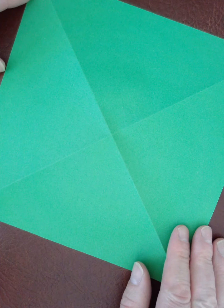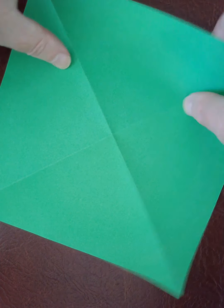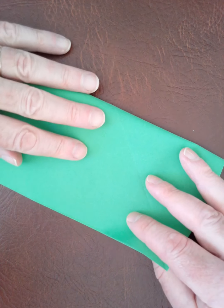So now we've got some diagonal folds and then we're going to fold along the lengthways.